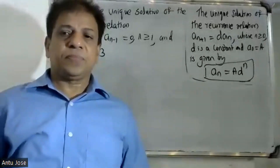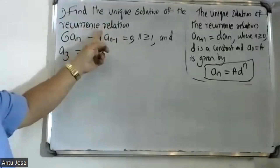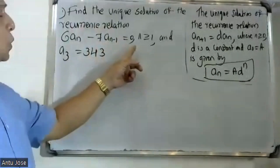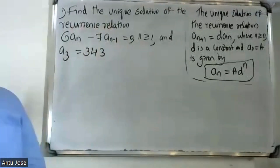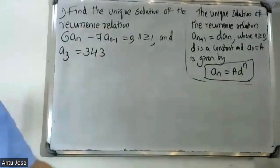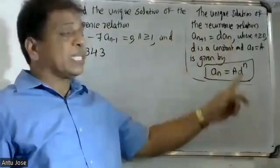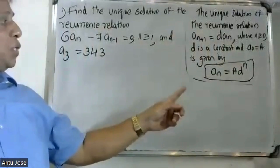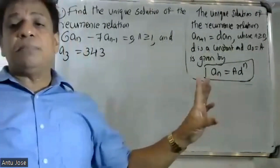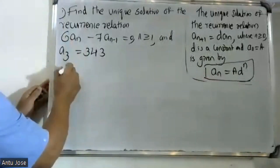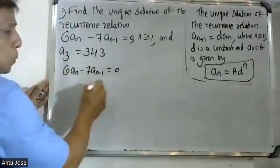Good morning students. Find the unique solution of the recurrence relation 6a minus 7a minus 1 equals 0, and a3 is equal to 343. The unique solution has a plus 1 equal to d, a constant, and a is given by a equals a into d raised to n.